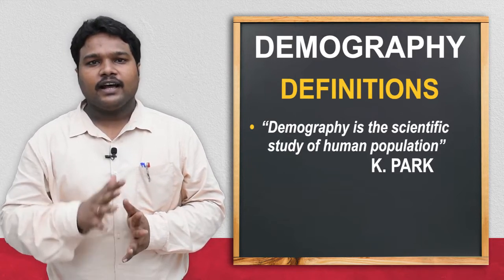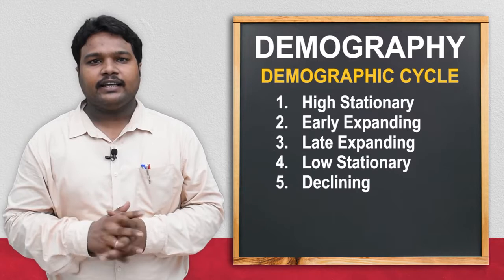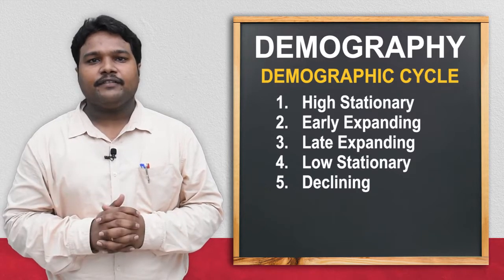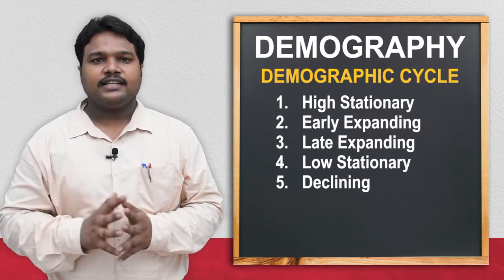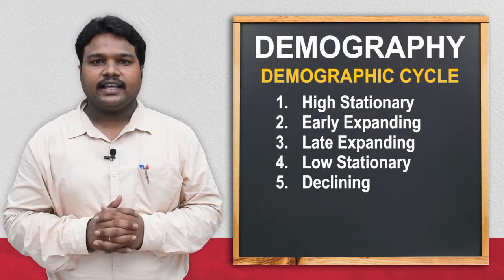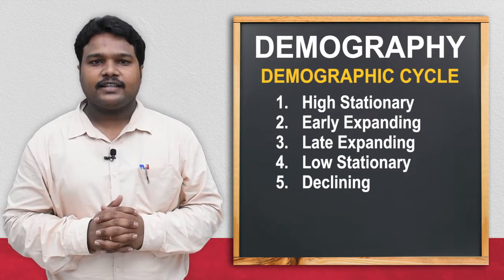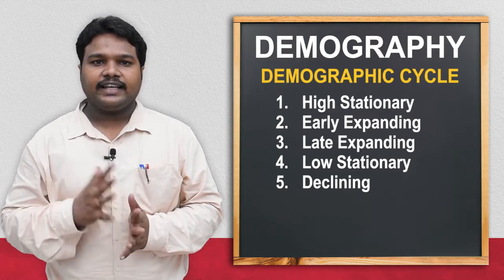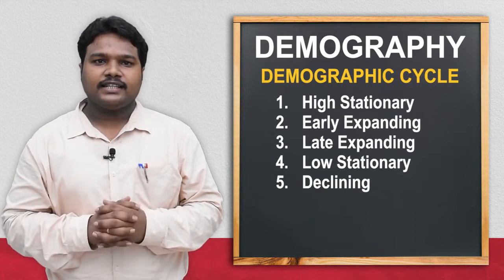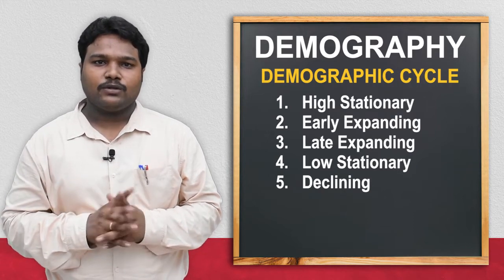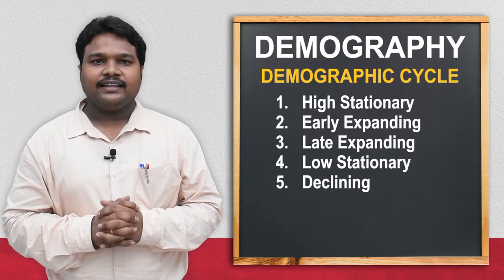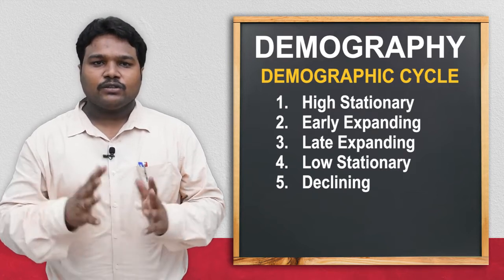The demographic cycle has five stages: the first stage is the high stationary stage, the second is the early expansion stage, the third is the late expansion stage, the fourth is the low stationary stage, and the fifth is the declining stage.